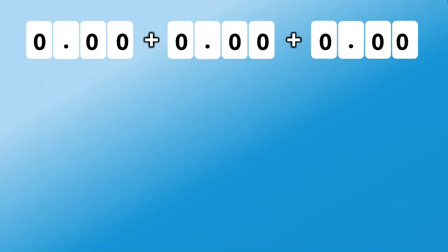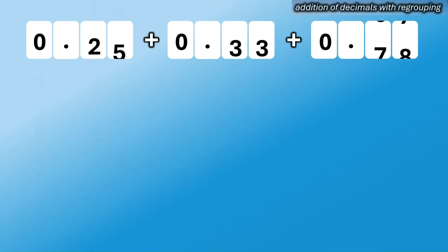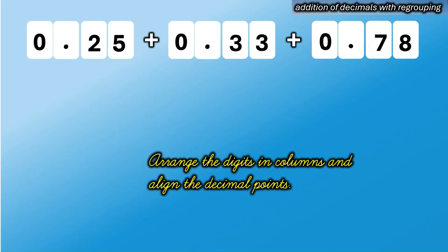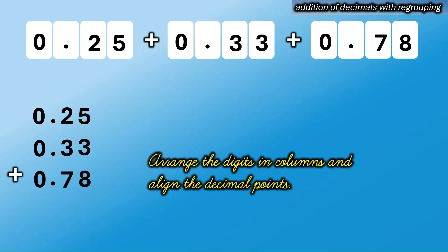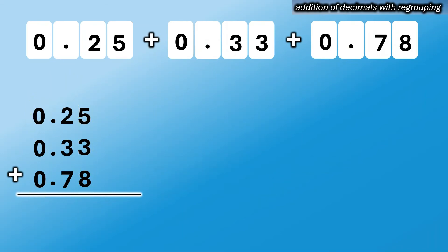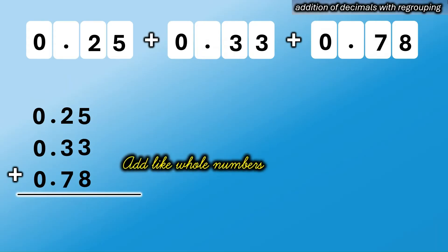We have here an example: 25 hundredths plus 33 hundredths plus 78 hundredths. This is an example of adding decimals with regrouping. Step 1: write the decimal numbers in column and align the decimal points. Step 2: add the digits just like whole numbers. Remember to insert or affix zeros in empty decimal place values if needed, so that all the numbers have the same number of decimal places.